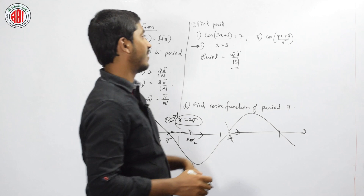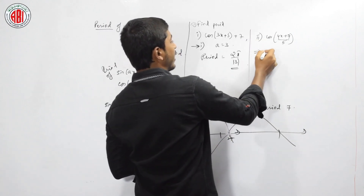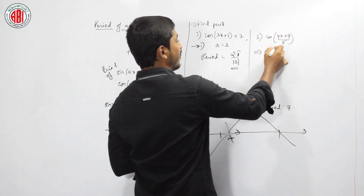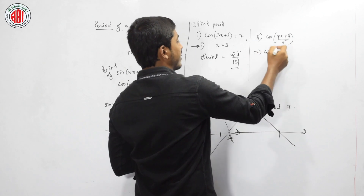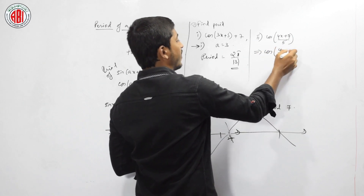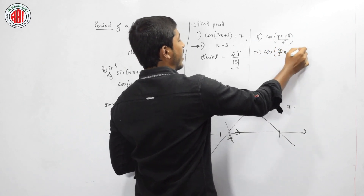Let us take the second problem. The question given is cos of (4x + 9) by 5. Let us separate it as (4 by 5)x plus 9 by 5. So a equals 4 by 5, and the period is 2pi by mod(4/5), which equals 2pi times 5 by 4, that is 5pi by 2.